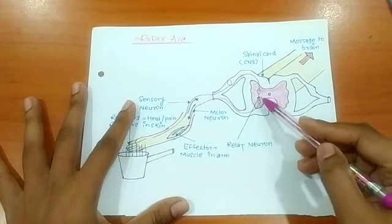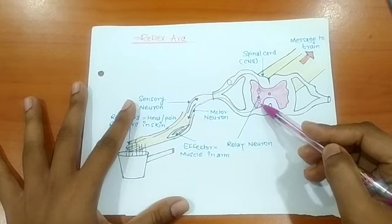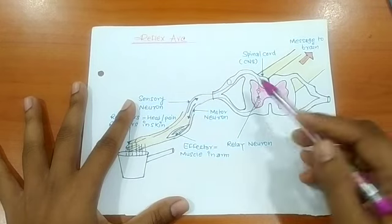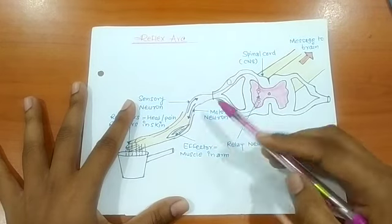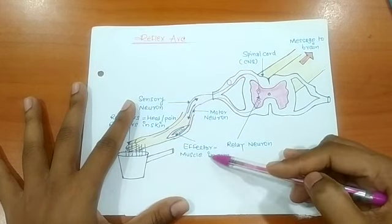This is the motor neuron. This is the relay neuron. The relay neuron is located between the sensory neuron and motor neuron. These are effectors or muscles in the arm.